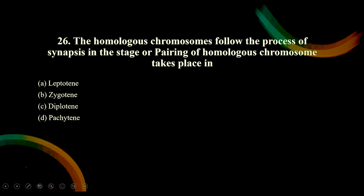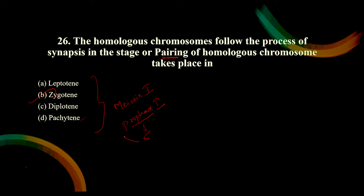Homologous chromosomes follow the process of synapsis in the stage of pairing. Stage or pairing of homologous chromosomes takes place - if it is pairing, you have to remember the zygotene stage. In leptotene, condensation happens. In pachytene, crossing over happens. In diplotene, chiasma formation occurs. In the zygotene phase, the pairing of homologous chromosomes takes place. These are the stages in meiosis 1 - prophase 1 has five substages.